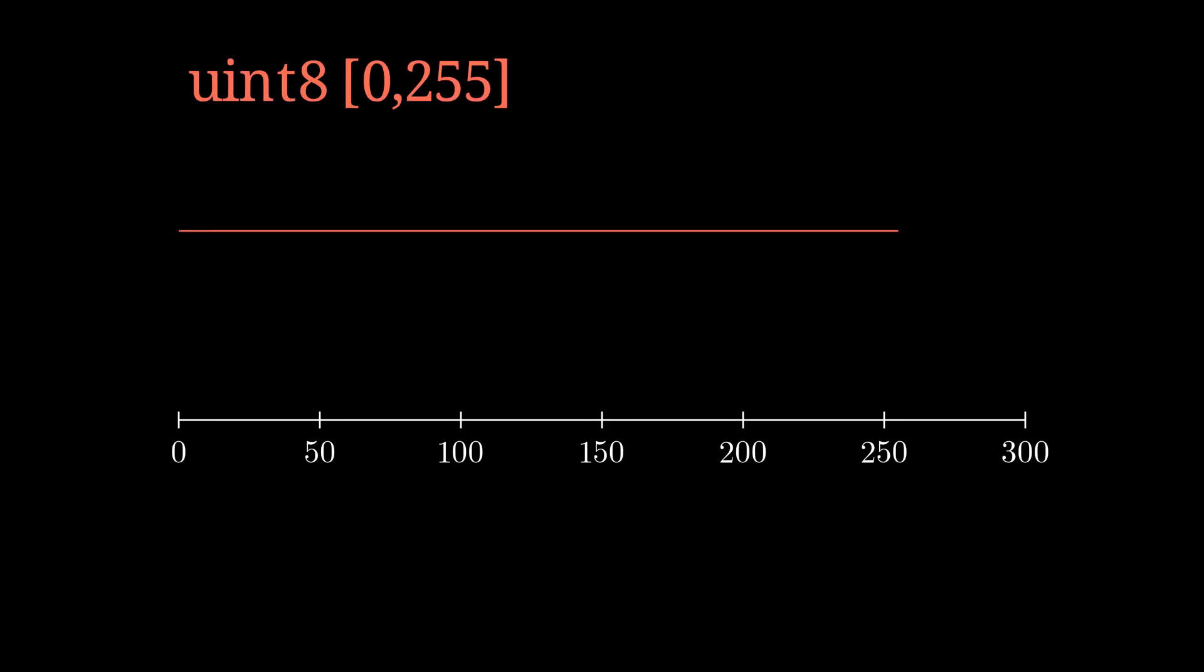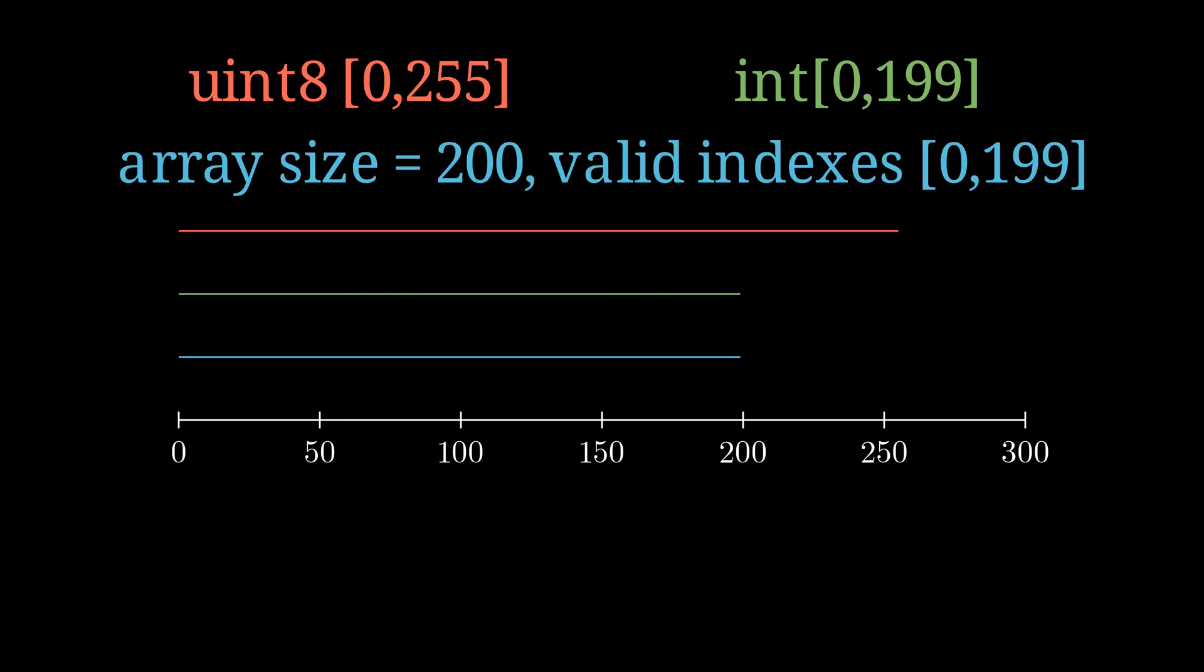using unsigned int 8, which has a value range of 0 to 255, versus using int 0 to 199, to index an array with 200 elements.